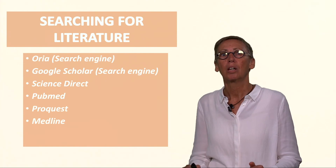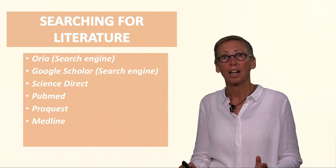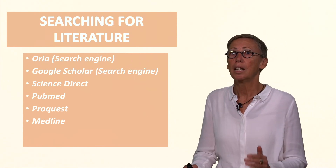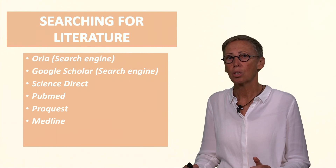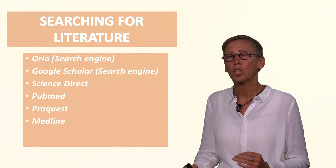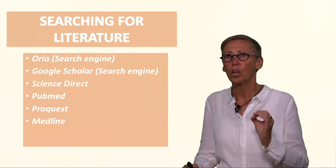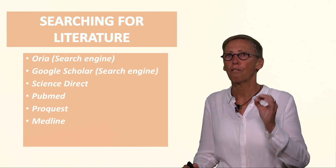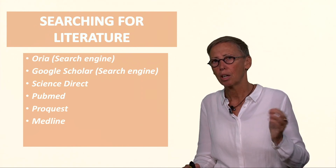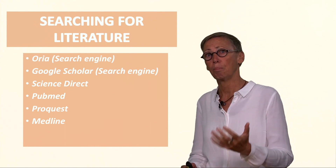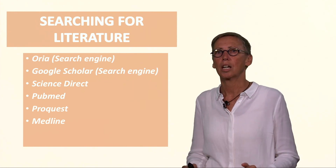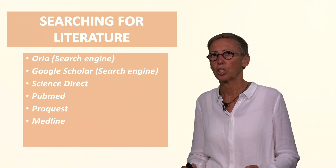When searching for your literature, if you're in Europe you'll probably be able to use Aurea as a search engine. Google Scholar is available everywhere. ScienceDirect, PubMed, ProQuest, and Medline are databases that house a lot of journal articles relating to the topics you'll be looking for. We search these databases because we want peer-reviewed literature from an ideal source — not secondary sources, not manufacturers, as they may bring bias because they're selling a product. Be very aware of who funded the study and where and by whom it was conducted.